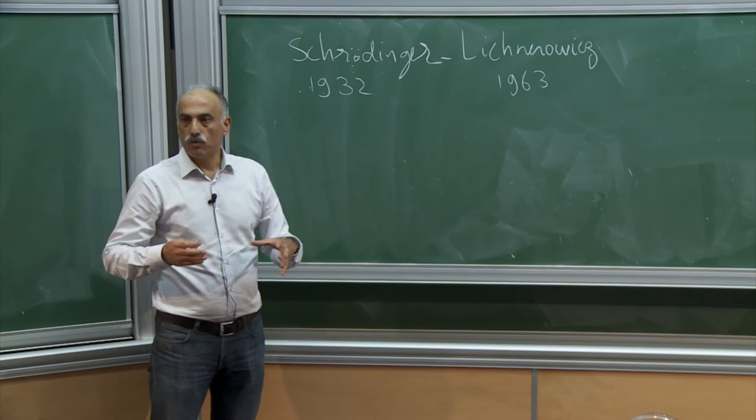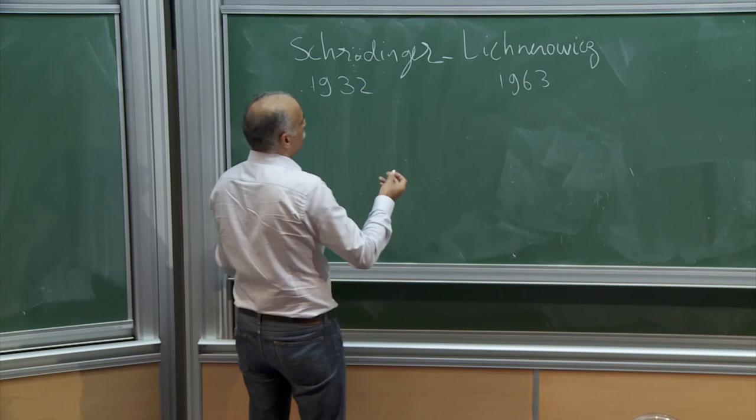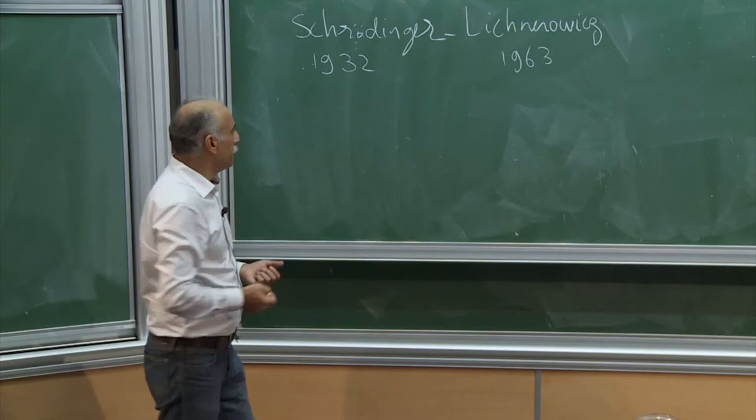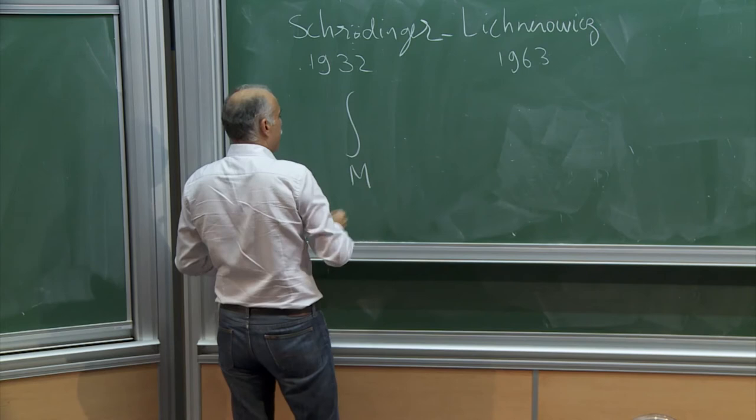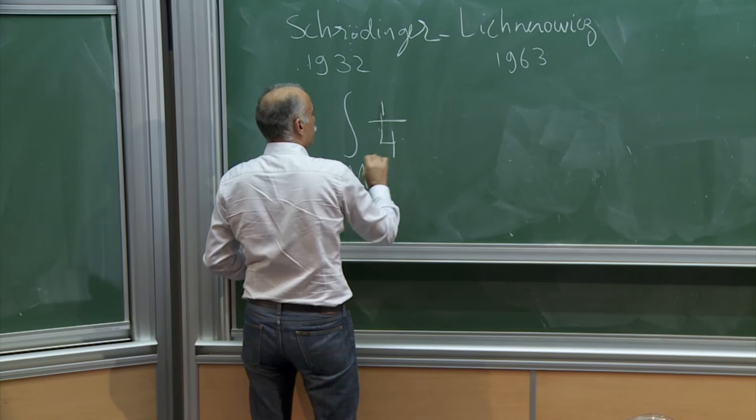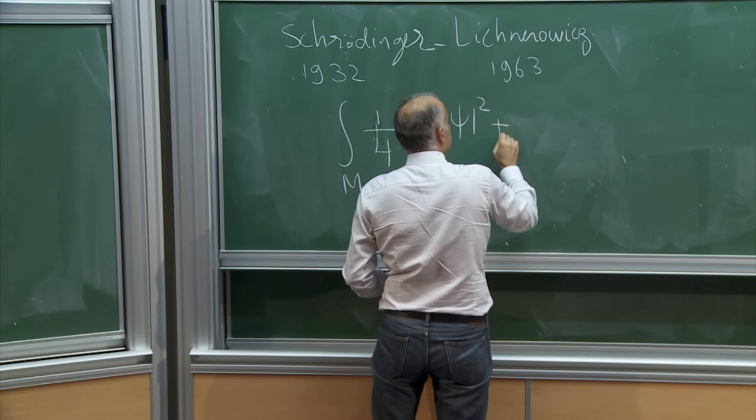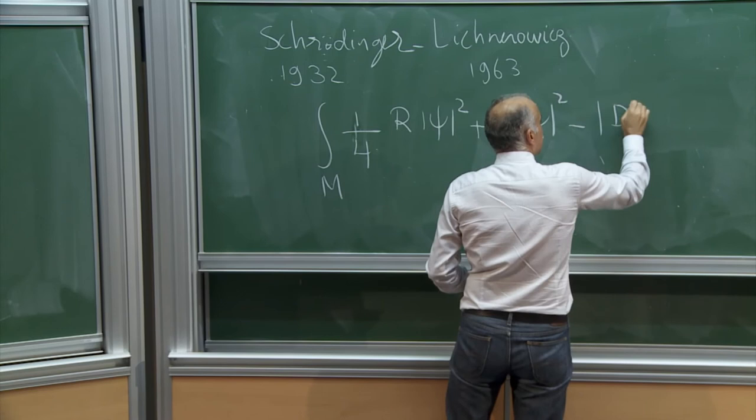And so, for a compact manifold, so this is what we call the Buchner formula by Mishne. So I don't want to define the whole thing, so let me write down this formula. So if you integrate over a compact manifold M, R for the scalar curvature, 1 over 4 R psi squared plus nabla psi squared minus D psi squared, integrated against dM.